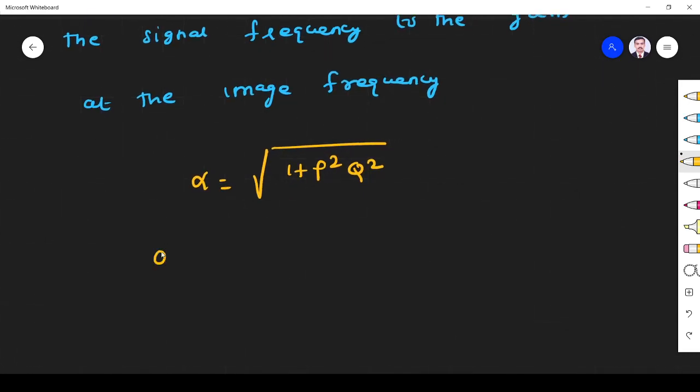First we define what is Q. Q is the quality factor of the tuned circuit in the amplifier in the loaded condition.